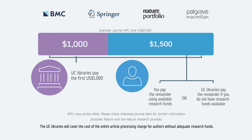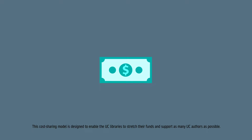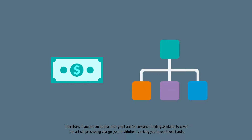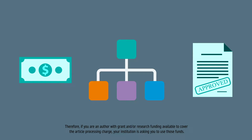This cost-sharing model is designed to enable the UC Libraries to stretch their funds and support as many UC authors as possible. Therefore, if you are an author with grant and/or research funding available to cover the article processing charge, your institution is asking you to use those funds.